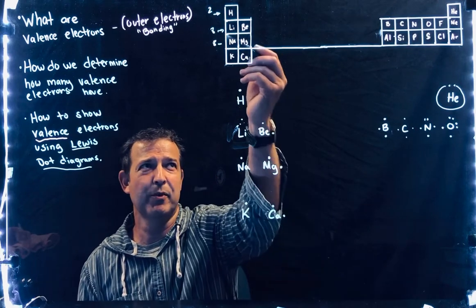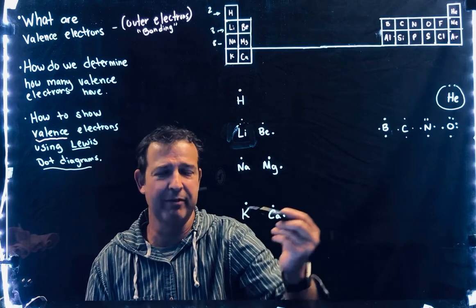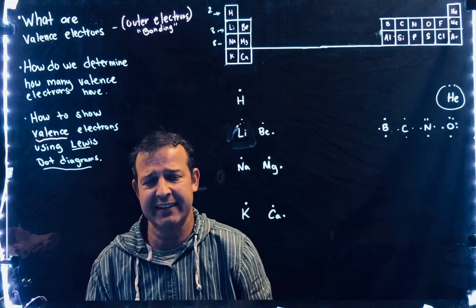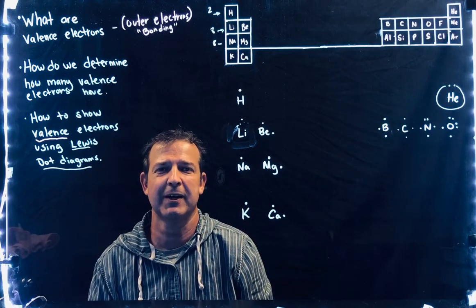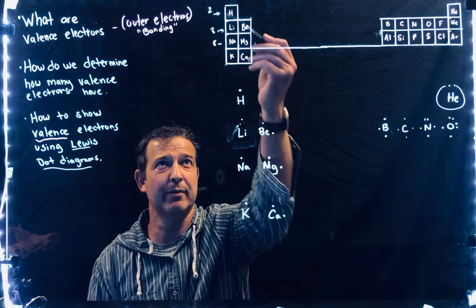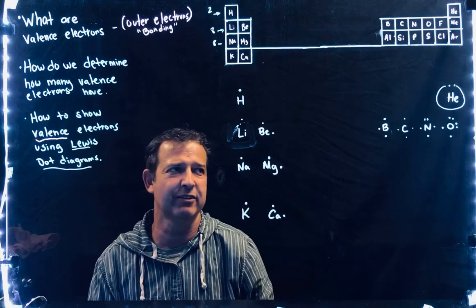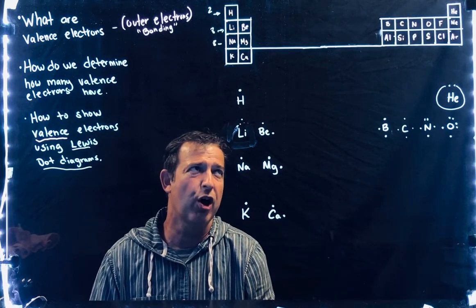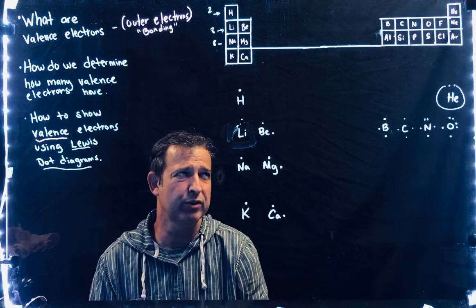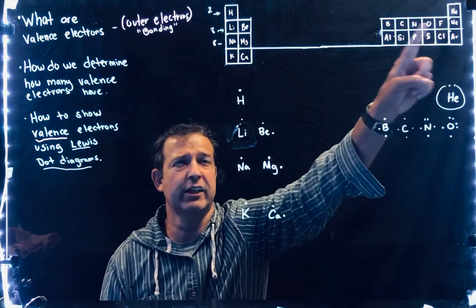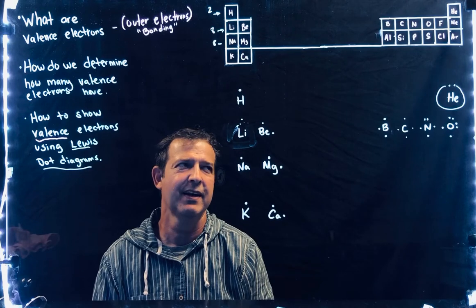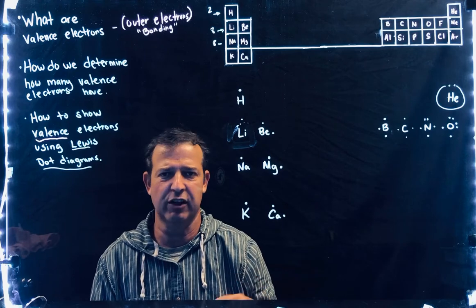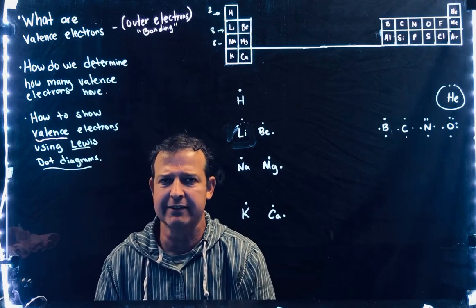The number of the position going across tells you the number of valence electrons. The atomic number tells you the total number of electrons. Valence electrons are important for bonding because atoms all want to be more stable, and to get more stable they need to have full outer shells. They either have to gain, lose, or share electrons to become more stable, and that gets us into bonding.